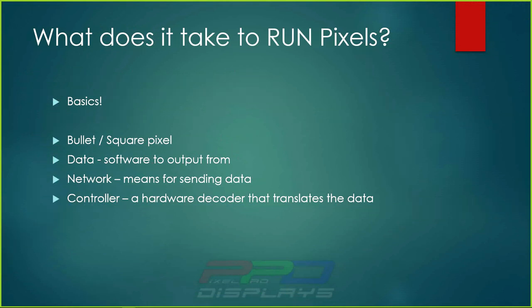What does it take to run pixels? Sticking with the basics: there are bullet and square type pixels. We need data — we need a way to send data out, and the data comes from two places. Number one, it comes from the software we're outputting from, and then it comes from the controller. The software pushes data out to the controller via the network, sending coded data from the sequencer — for example xSchedule or FPP — out to a controller which then decodes E1.31 and translates it into physical data for pixels.